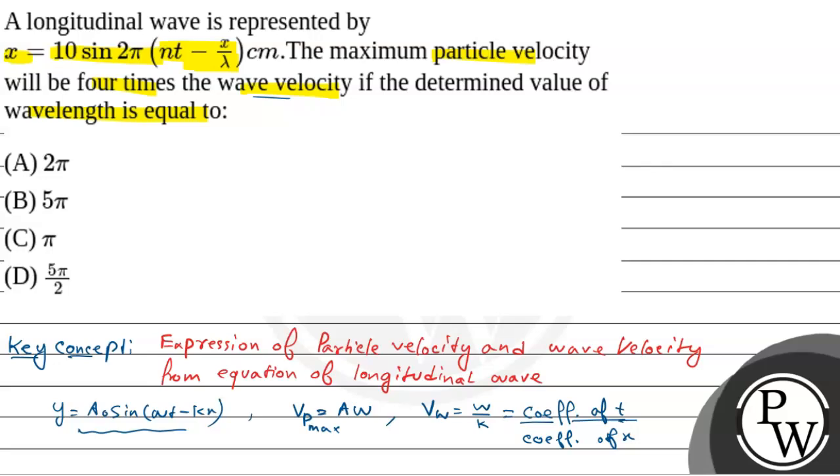Now we have a longitudinal wave that is x equals 10 sin 2π nt minus 2π x by λ. Now here the amplitude is 10.